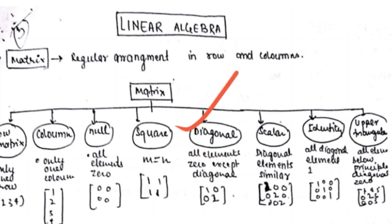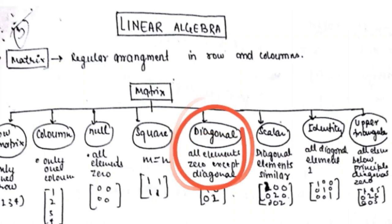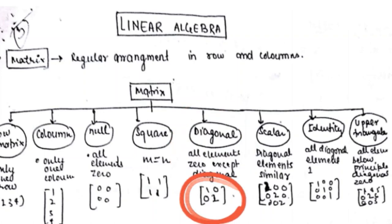A diagonal matrix is another type of matrix in which all elements are zero except the diagonal values. The diagonal values can be one, two, three, or whatever — they just must not be zero. This is an example of a two by two diagonal matrix.